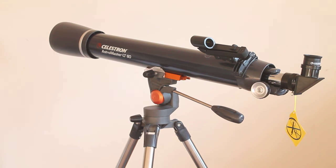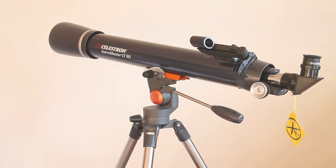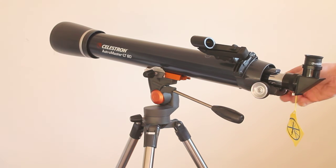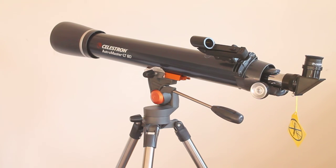To keep costs down, it does come with a very basic plastic-bodied diagonal, which is a 90-degree mirror, so it gives an upright image but the image is left to right opposite. I've currently got the 10mm eyepiece. Focusing is very, very easy, very smooth.